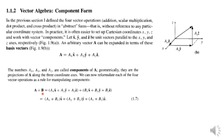For the addition of two vectors A and B: A is ax·x̂ + ay·ŷ + az·ẑ and B is bx·x̂ + by·ŷ + bz·ẑ. The x-components are added as scalar quantities and multiplied by the unit vector. So the new x-component is ax + bx, new y-component is ay + by, and new z-component is az + bz.